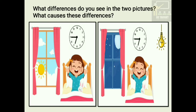And in the second picture, it is evening 6:45 PM. As you can see the time shown in the clock, as the sun sets, we do not get light from the sun. Therefore, we cannot see the things around us clearly.